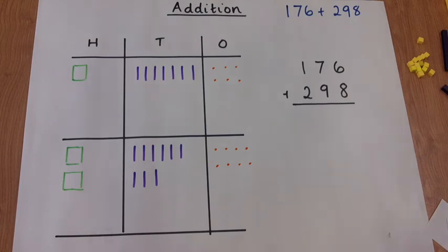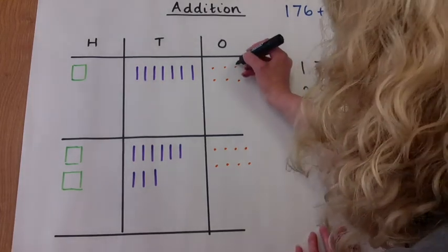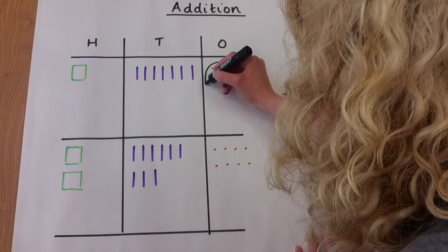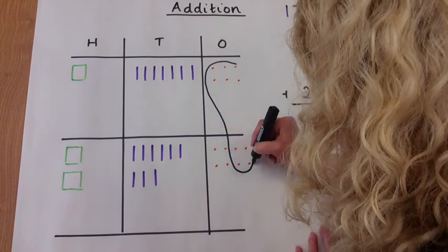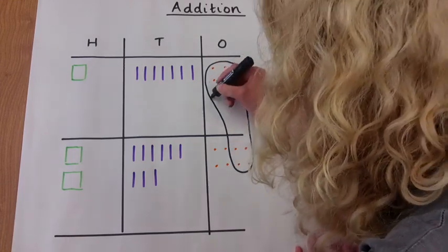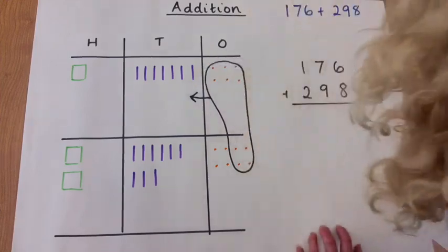So looking at the ones column first, if we add 6 plus 8, we get 14. We need to regroup 10 of the ones and place that into the tens column.